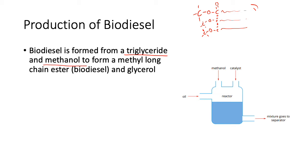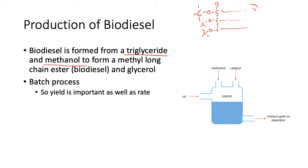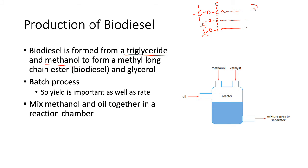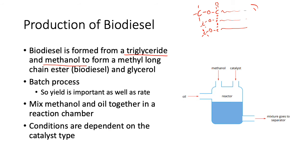The products are a long-chain ester, which is the biodiesel, and glycerol. This is a batch process, which is different to all the others. Yield is very important as well as rate. You mix the methanol and oil together in a reaction chamber, and the conditions differ depending on the catalyst type.